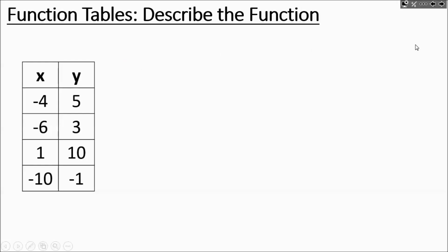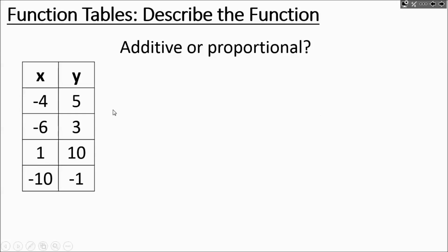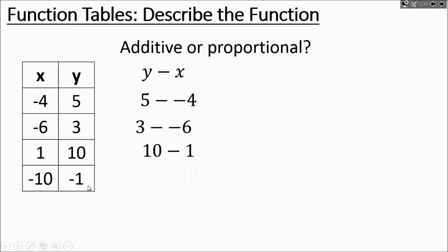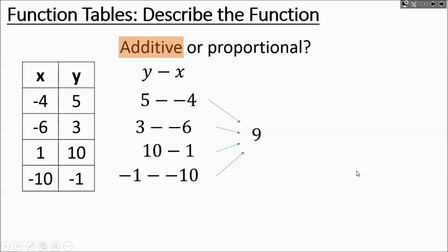Here's our next table. Is it additive or proportional? 5 divided by negative 4 is not the same as 3 divided by negative 6, so it's not proportional. Let's try y minus x: 5 minus negative 4 is 5 plus 4, and 3 minus negative 6 is 3 plus 6. They all work out to 9. So it's an additive relationship — we're adding 9 to every x value. The rule is y equals x plus 9.